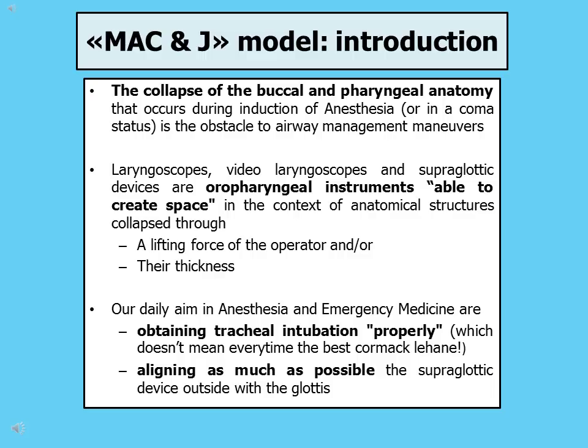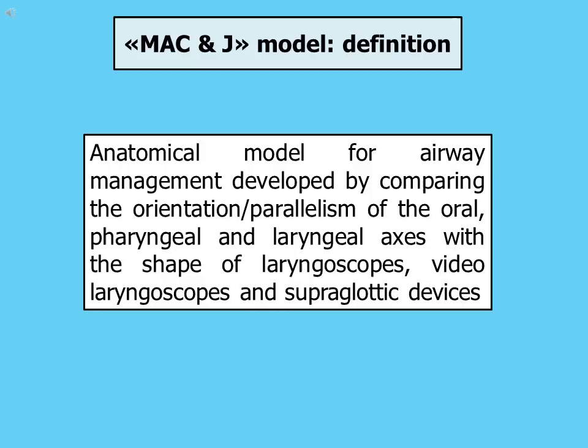How many times do you observe the patient position before performing a laryngoscopy or inserting a supraglottic device? How many times do you choose an airway management device in relation to the patient position? How many times do you proceed to change the patient position when you need to change the airway management device? The MAC and J model is an anatomical model — before performing laryngoscopy or introducing a supraglottic device, you should pay attention to your patient's position, because most of your decisions and the device you are going to choose will depend on it.